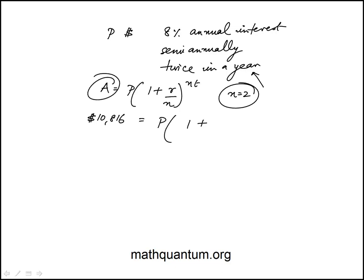So here the interest rate is 8%. This would be 8 over 100, divided by 2, and then 2 times 1 because it's just one year. So there's two compoundings here.